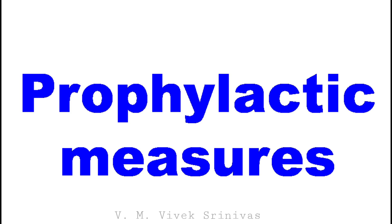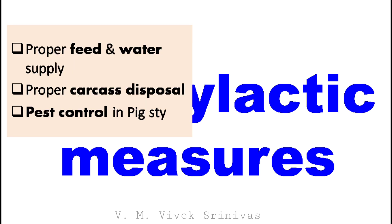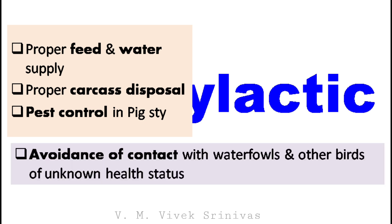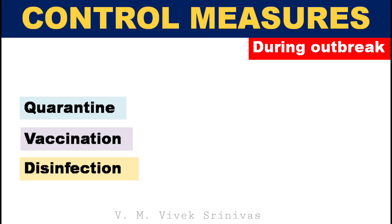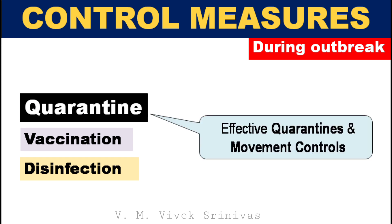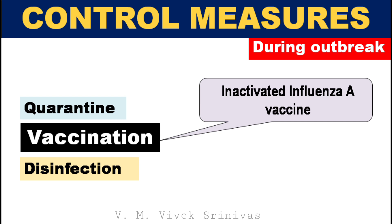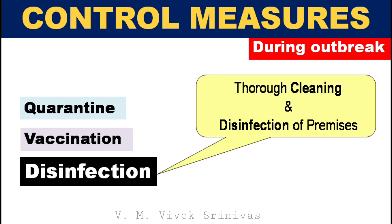Prevention and control — Prophylactic measures: The following measures should be established to prevent all types of viral and communicable diseases in pig farming: proper feed and water supply, proper carcass disposal, pest control such as insects and mice control in the pigsty, avoidance of contact with waterfowls and birds of unknown health status, control of human traffic so employees do not have contact with outside animals, control of vehicle traffic, and strict disinfection of equipment in the premises. During outbreak situations, effective quarantines and movement controls should be followed, along with vaccination using inactivated vaccine and thorough cleaning and disinfection of the premises.